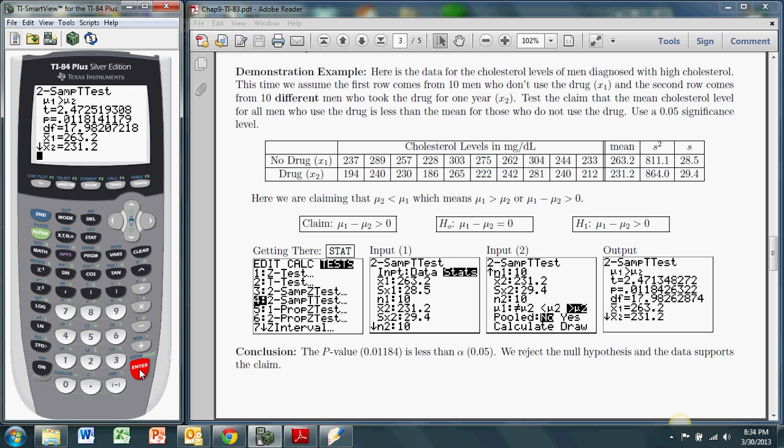And we get a test statistic that is about the same. It's different at the third decimal place. So it's using raw data, so there's no round-off error involved here. Well, there's some, but it's very small. And the p-value is .011814. Before we had .011842. So the p-value is basically the same. And it's still smaller than the significance level. So using the raw data, we come to the exact same conclusion. We reject the null hypothesis and support the claim that the mean cholesterol level for all men who use the drug is less than the mean for those who do not.